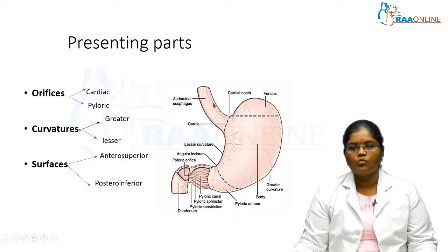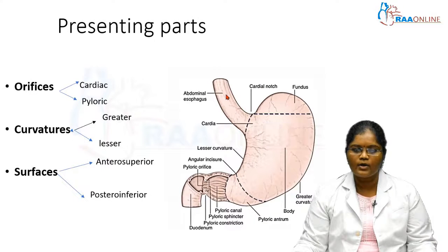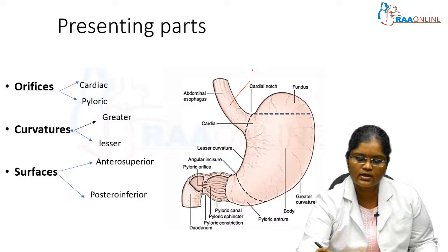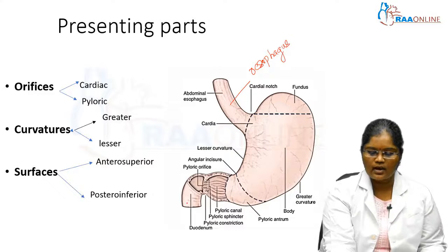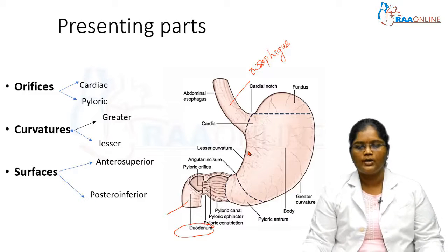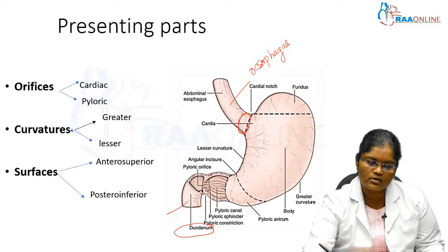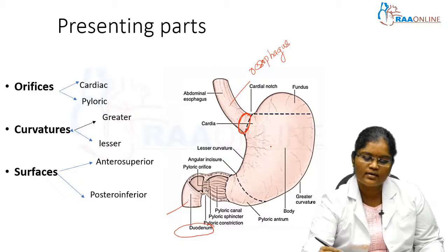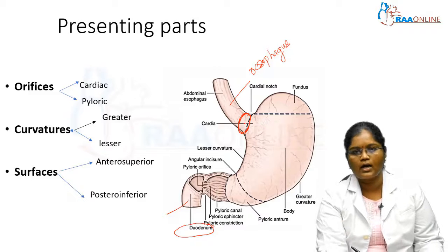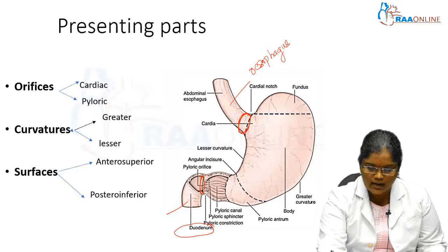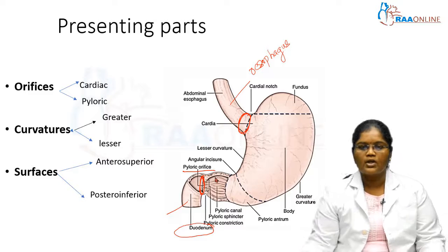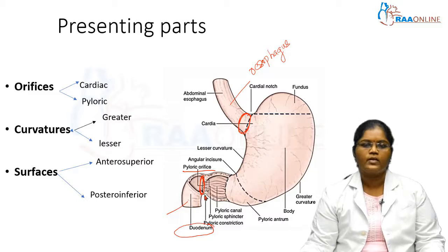Now let's look at the parts of the stomach. The stomach is a distended bag with one entry point and one exit point. The entry is from the esophagus and the exit communicates with the first part of the duodenum. There are two orifices: the cardiac orifice, which communicates the esophagus with the stomach, and the pyloric orifice at the lower end of the stomach, which communicates the stomach with the first part of the duodenum.